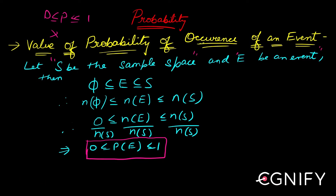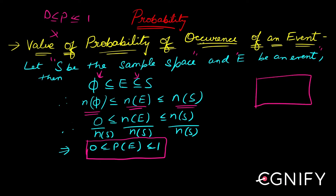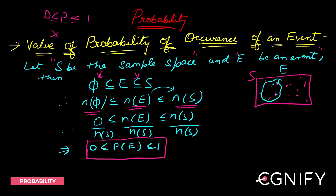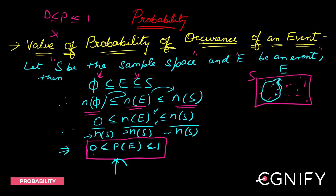Let S be your sample space and E be your event. E is a subset of S, and the empty set φ is a subset of everything — meaning there are no elements in φ. So we have n(φ) ≤ n(E) ≤ n(S). Visually, S contains many outcomes and E contains fewer points inside it. Since 0 ≤ n(E) ≤ n(S), dividing throughout by n(S) gives 0 ≤ n(E)/n(S) ≤ 1, which means 0 ≤ P(E) ≤ 1.